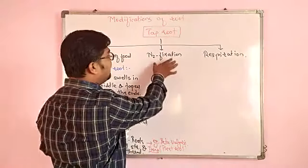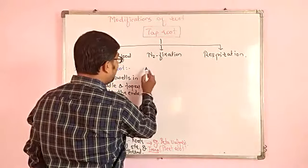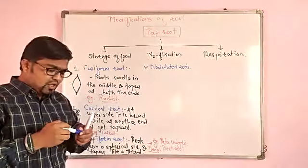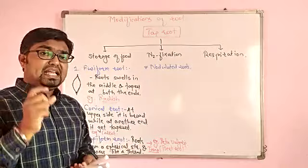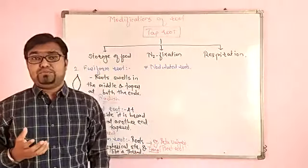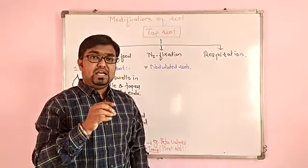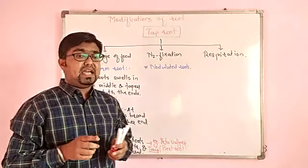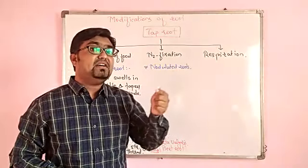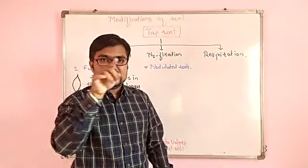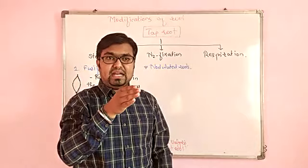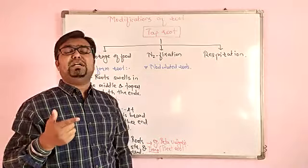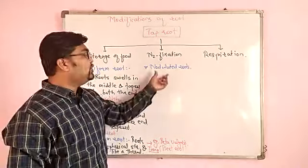Next modification is for nitrogen fixation. These roots are called nodulated roots. In nodulated roots, nitrogen-fixing bacteria — for example, Rhizobium — enters into the root and reaches up to the cortex. The cortex is the middle part of the root. After entering the cortex, the bacteria causes changes in certain cells, those cells divide multiple times and form a tumor. We call that tumor a nodule.